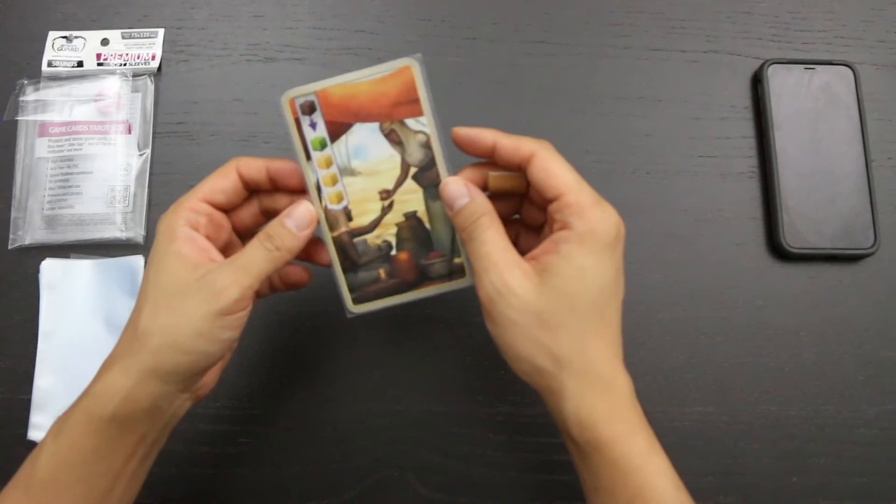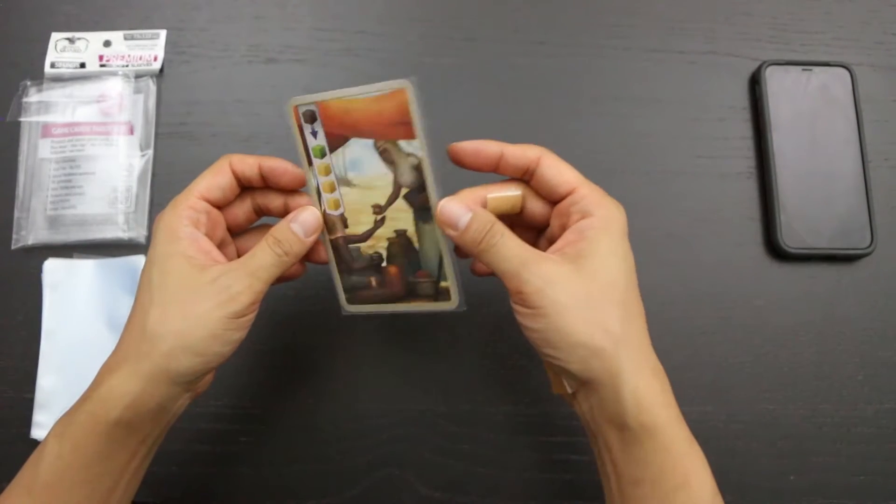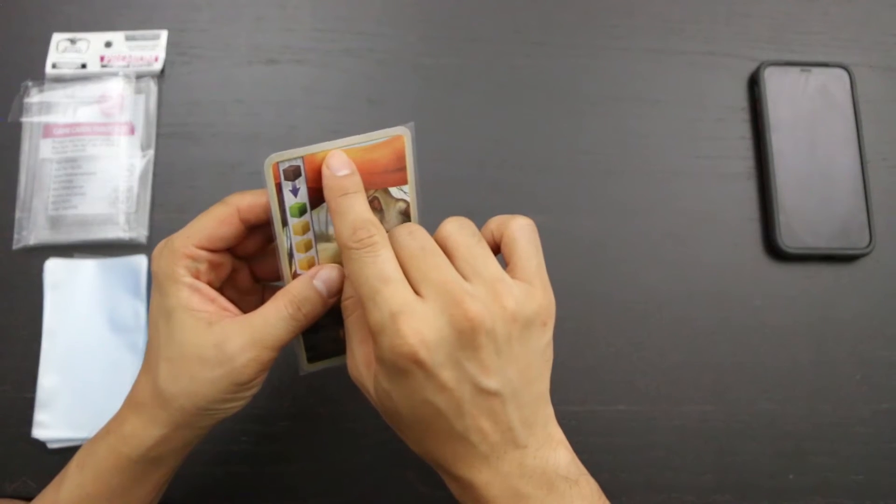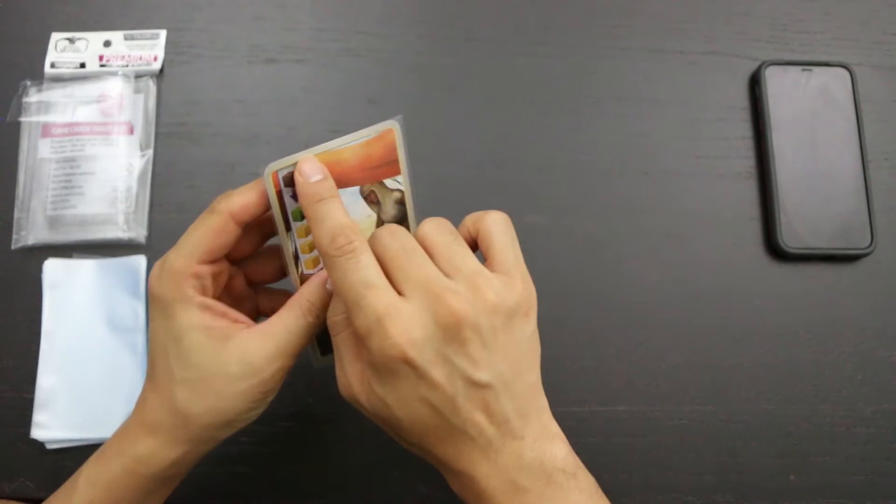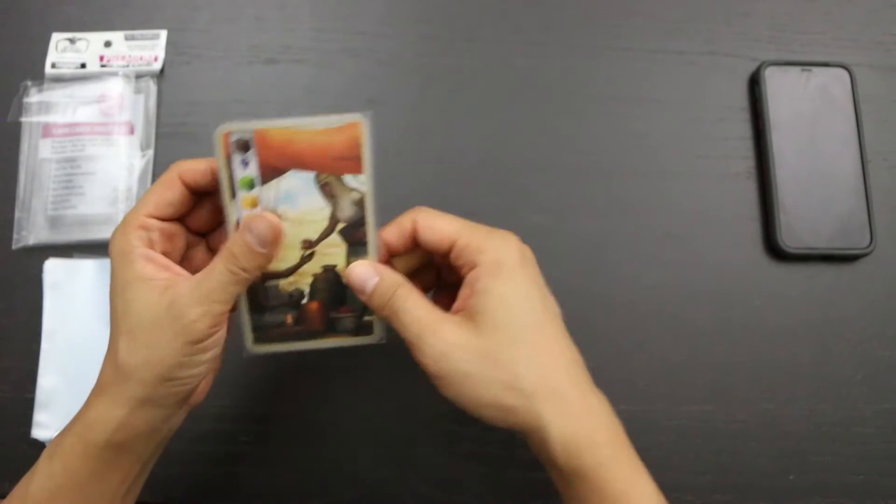It is a fairly good fit in terms of the width. There is a bit of play on each side, and it is a very tight fit at the top. There is barely any space between the opening of the sleeve and the top edge of the card. It is basically exposed at the top here.